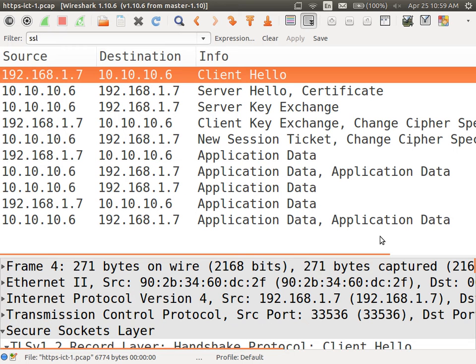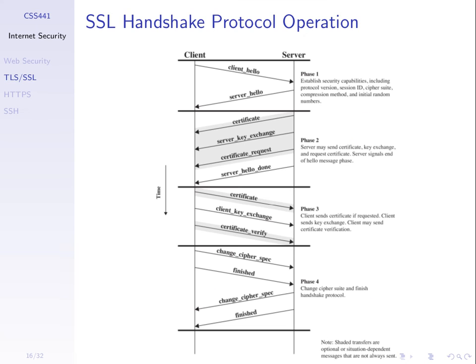This is the exchange of messages for our SSL connection between browser and server. Remembering there are four phases: phase one — negotiate capabilities, say hello. Phase two — server authentication using a certificate, and server key exchange. Phase three — optionally allow a client to send a certificate to the server, which is not commonly used in web browsing, but we will see the client key exchange. Phase four — they finish up with a changed cipher spec and finished message.